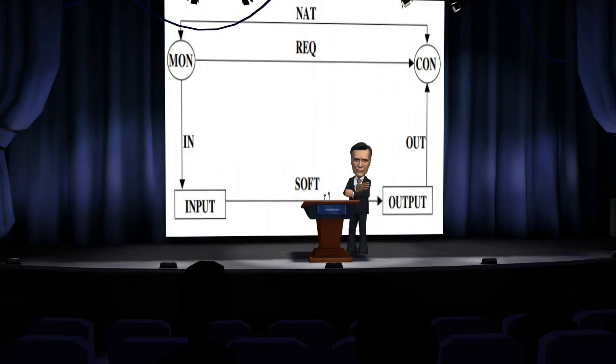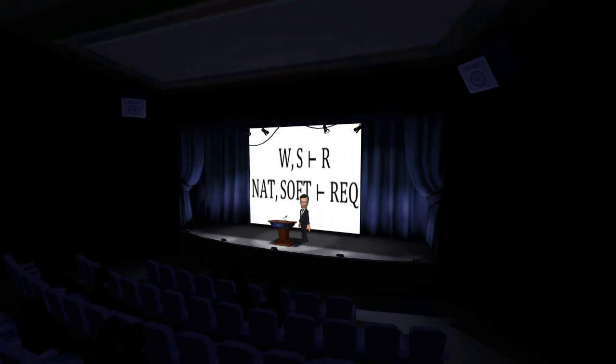To understand the correlation between problem frames and the four variable model, we can rewrite both as sequences. For the four variable model, and for the problem frame, the requirement and the world (aka nature) combined constrains the software requirement of the four variable model on the bottom line, which is the specification on the machine in the problem frame approach on the top line.